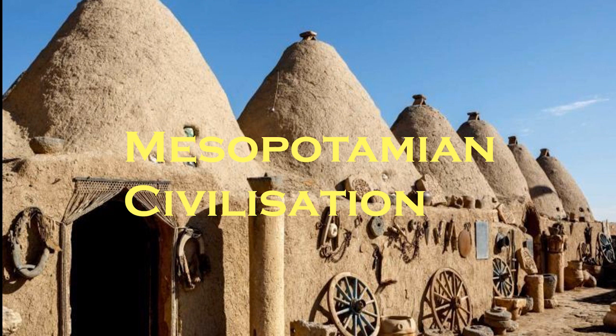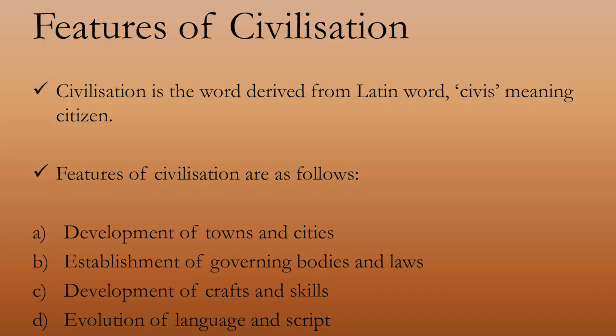Let us know the definition of the word civilization before we begin with the chapter. Civilization is the word derived from the Latin word 'civis', meaning citizen. Hence, the settlement of a group of humans at one particular place marks a civilization. Here are the features of civilization.